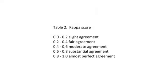The interpretation of the Kappa score is as follows: if it's between 0 and 0.2, there's slight agreement; if it's between 0.81 and 0.99, there's almost perfect agreement.